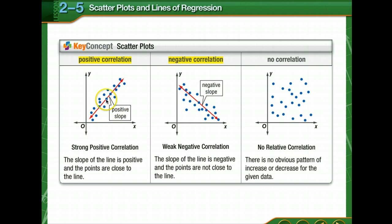A strong positive correlation, the slope of the line is positive and the points are close to the line. A weak negative correlation, the slope of the line is negative and the points are not close. See how much further they're scattered away from the line? These are closely grouped around the line. These are scattered.